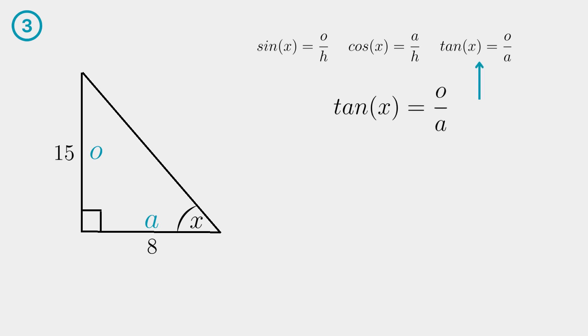Plug your values into the formula and see that your unknown variable is in the tangent function. To swap the X and the fifteen over eight with each other we need to use the inverse tangent function. On most calculators you can access the inverse of tan by pressing shift and then tan or the second button and then tan.